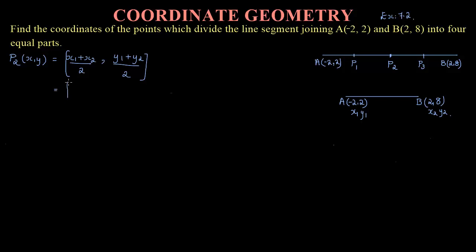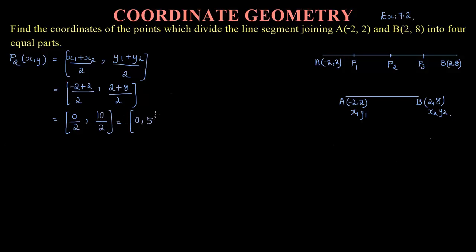Substituting the values: (−2 plus 2) divided by 2, comma (2 plus 8) divided by 2. That gives 0 divided by 2, comma 10 divided by 2. Zero divided by anything is always 0, and 10 divided by 2 is 5. So the coordinate of P2 is (0, 5).